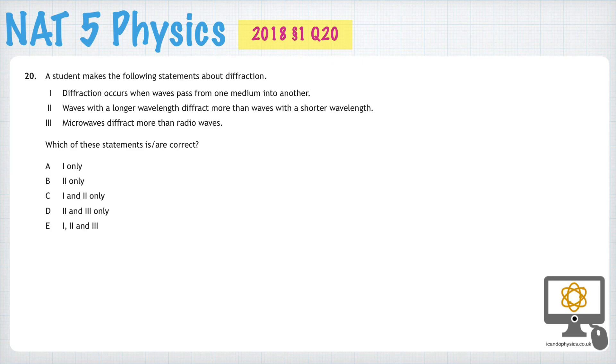Question 20 from the 2018 National 5 Physics paper is about diffraction and testing our understanding of what happens when waves travel around objects or through gaps. So let's go through each of these statements and see if they are correct.